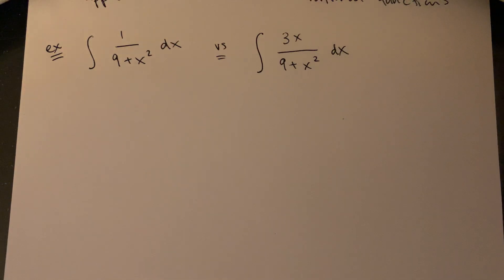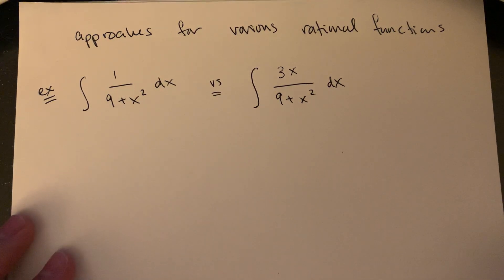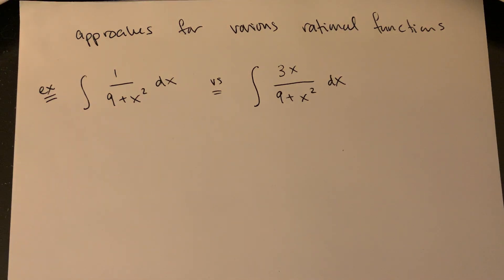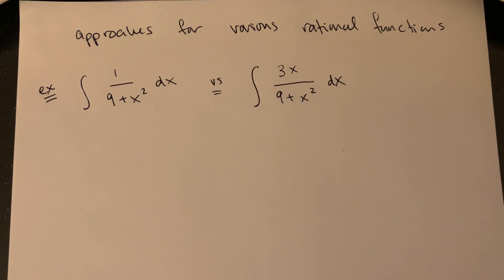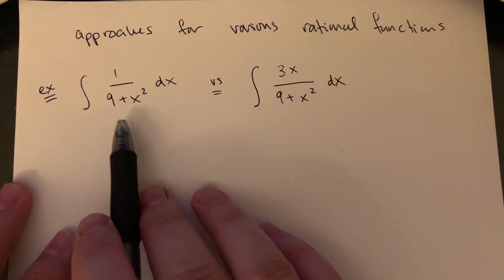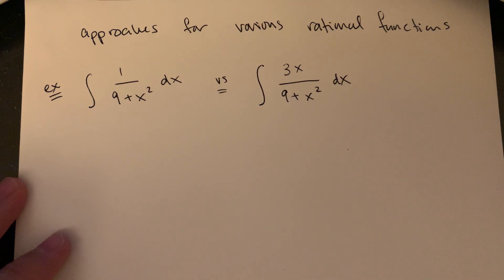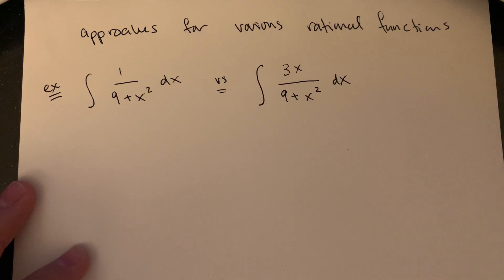That's a bit of formula review. The other thing I want to spend time on in this first section of chapter 8 is a review of basic approaches, including some less common forms, and approaches for various rational functions. A rational integral means a fraction — so if you have an integration with a fraction, we've generally said to do a u-sub and let the bottom equal u. That's still a decent go-to, but I want to compare two examples.